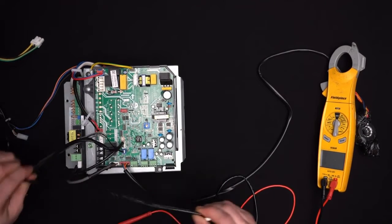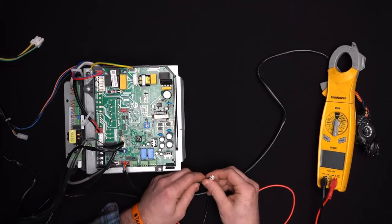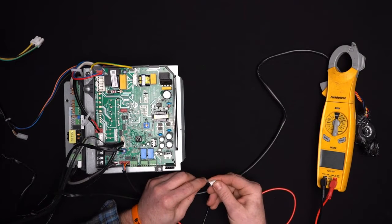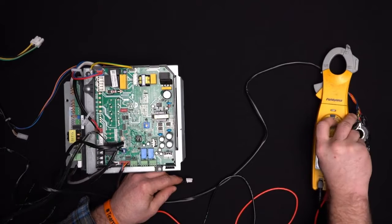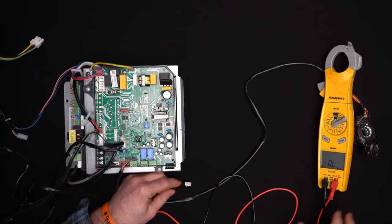We'll remove these. You'll check resistance on a thermistor. These are 10K thermistors. I'm going to set my meter to ohms.